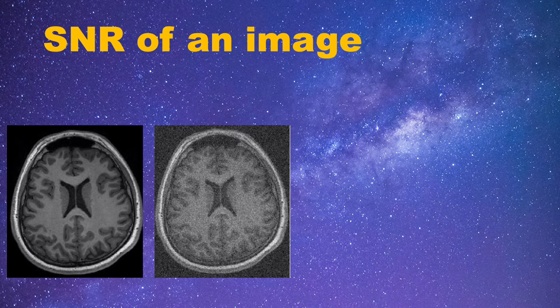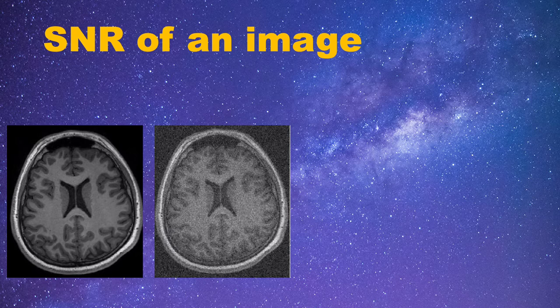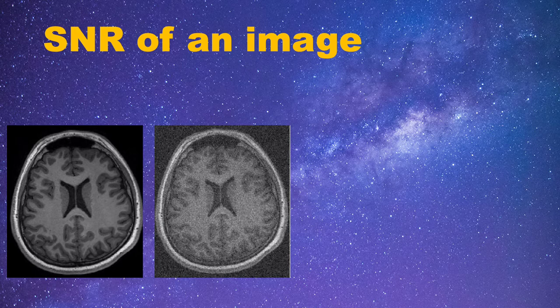Actually, these two images are the same image but with different SNR level. What I did is adding Gaussian white noise to the left image to get the noisy one. Gaussian noise is the most common noise in MR images.